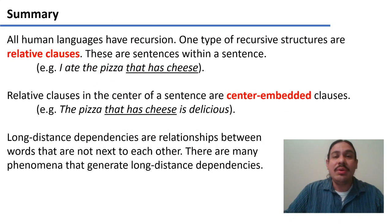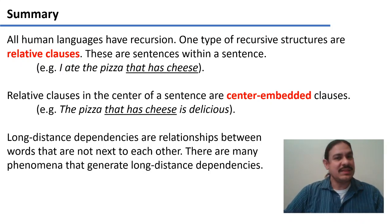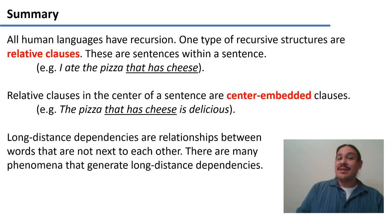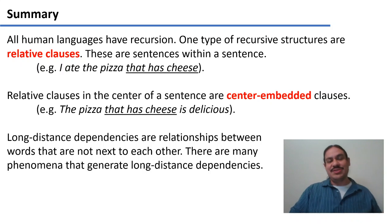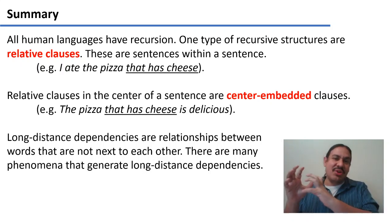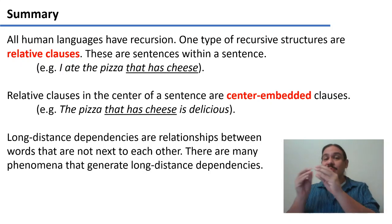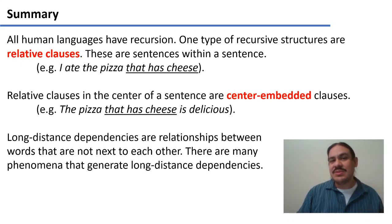In summary, all human languages have recursion, and one type of recursive structure is a relative clause — a sentence within a sentence, such as 'I ate the pizza that has cheese.' One kind of relative clause is a center-embedded clause, like 'the pizza that has cheese is delicious.' The second challenge is long-distance dependencies — relationships between words that are further apart. Some are due to recursion, some are not. These two are the main challenges when using finite-state machines to model human language.